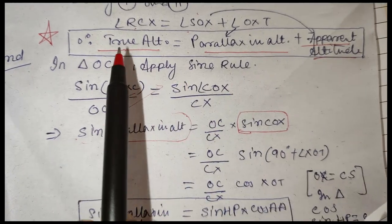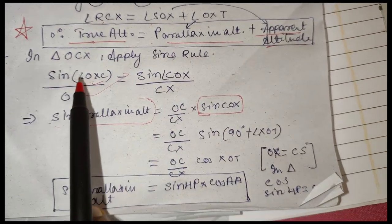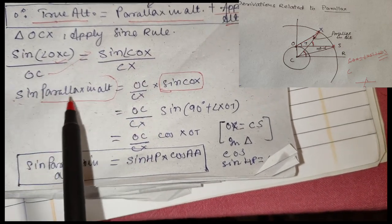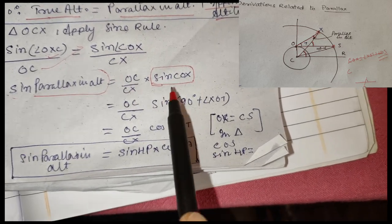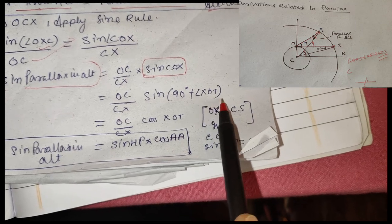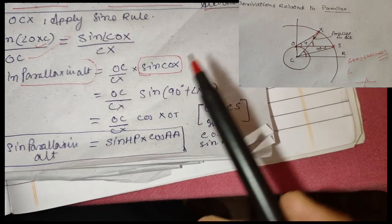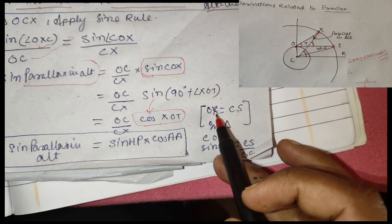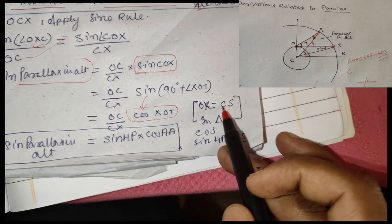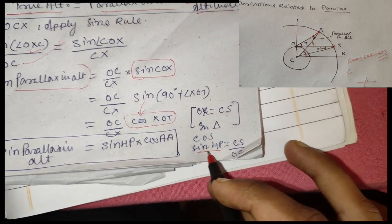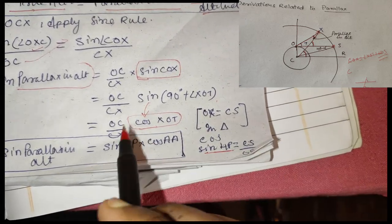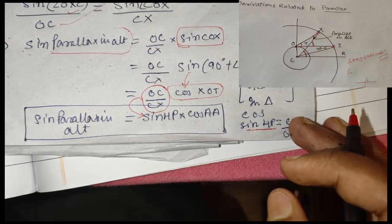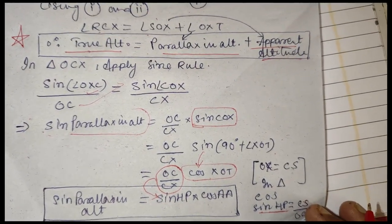In triangle OCX we apply the sine rule: sine of angle OXC divided by OC equals sine of angle COX divided by CX. Angle OXC is the parallax in altitude, so sine of parallax in altitude equals OC divided by CX times sine of COX. Since COX equals 90 degrees plus apparent altitude, this converts to cosine of apparent altitude. Since the radius of the earth is equal, OC divided by CX equals sine of horizontal parallax, giving us: sine of parallax in altitude equals sine of horizontal parallax times cosine of apparent altitude. This is the key result from this topic. Hope you have liked it. Thank you.